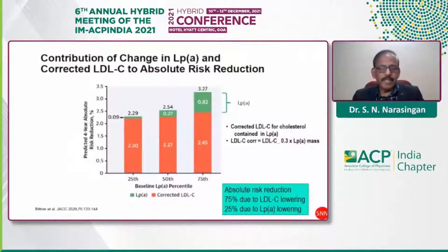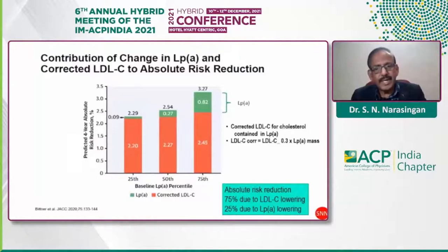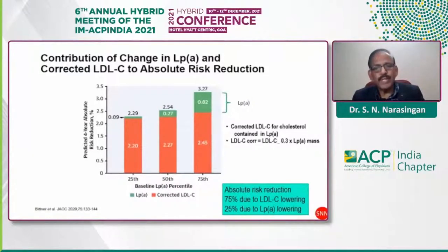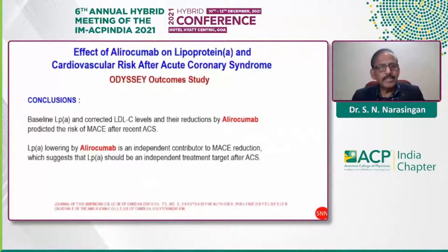Analysis from the ODYSSEY OUTCOMES study showed that the introduction of alirocumab clearly indicated that corrected LDL cholesterol is responsible for about 75% of the absolute risk reduction, while 25% of the absolute risk reduction is probably driven by lipoprotein(a) lowering. The corrected LDL-C formula is: LDL-C corrected = LDL cholesterol − (0.3 × lipoprotein(a) mass).